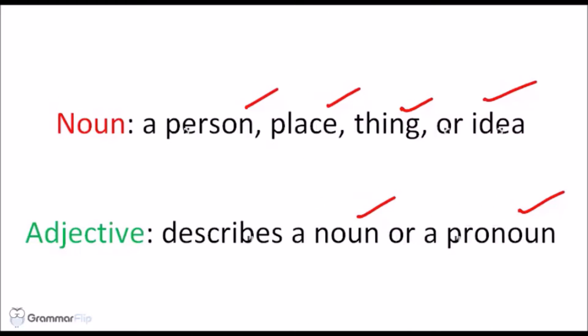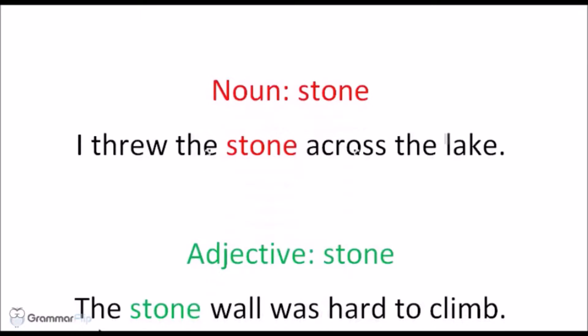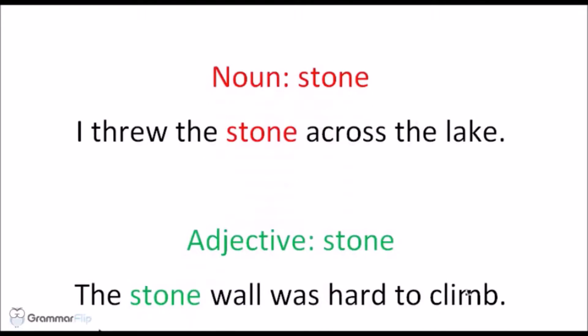Adjectives should describe nouns or pronouns. So let's take a look at a noun such as the word stone. In this sentence it says, I threw the stone across the lake. The word stone here in this sentence is a noun.